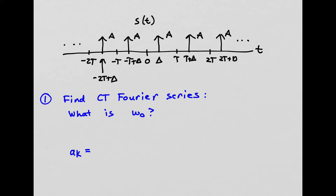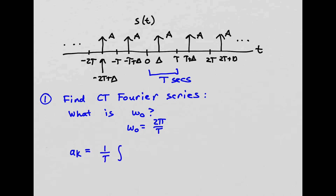In step one, we need to find the continuous time Fourier series. The first question is: what is the fundamental frequency ω₀? We remember that ω₀ = 2π divided by the period. The signal repeats every T seconds, so the period is T, meaning ω₀ = 2π/T. For a_k, we use the equation: a_k = (1/T) times the integral over one period of s(t) times e^(−jkω₀t) dt.